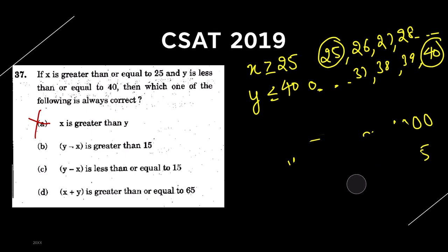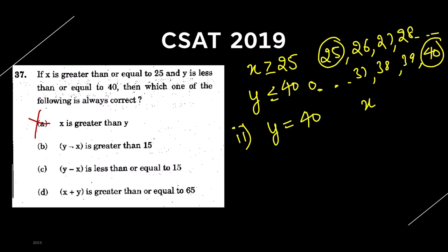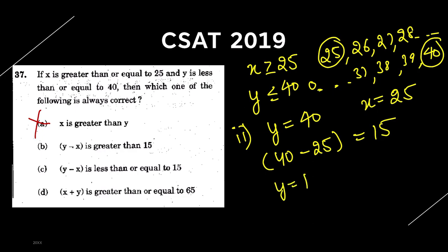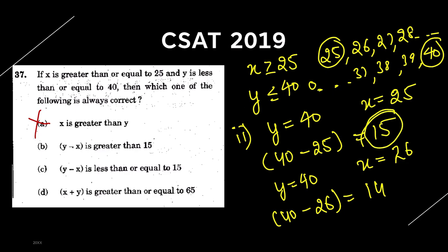Option 2: Y minus X is greater than 15. Test with Y = 40 and X = 25: Y minus X = 40 minus 25 = 15, which is not greater than 15. Test with Y = 40 and X = 26: Y minus X = 40 minus 26 = 14, which is less than 15. You can try any values and you will always find a result less than or equal to 15. So 15 is the maximum value Y minus X can reach, meaning Y minus X is not always greater than 15. Option 2 is also eliminated.